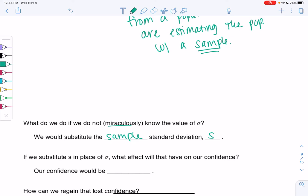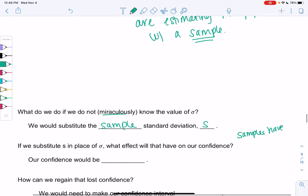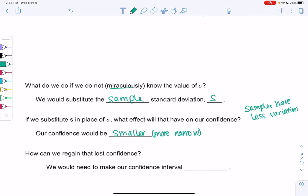Samples have slightly less variation than the population just because it's less data. It's just an estimate. If we substitute s in place of σ, our confidence would be smaller or more narrow. It's going to make the interval a little bit too much smaller. So we need to regain that loss confidence. We're going to need to do this trick to make our interval a little bit wider.